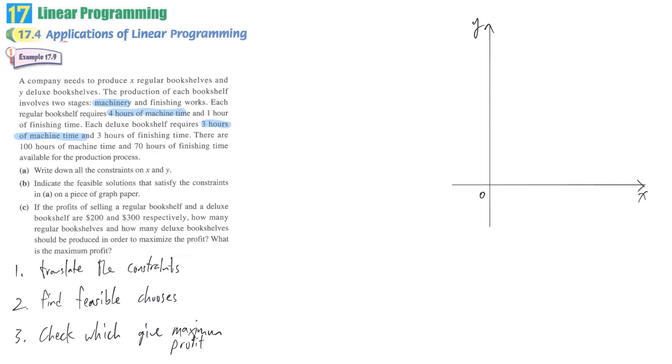So the first constraint, we just write down machine time. One regular bookshelf, we spend four hours. Two regular bookshelves, we spend two times four hours. So X regular bookshelves, we spend 4X hours. Together with, we still need to spare some time for deluxe products, so three hours of machine time. Three times the number of deluxe bookshelves, 3Y. And it should not exceed, that means it is smaller or equal to the available machine time, which is 100 hours.